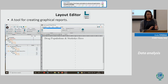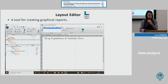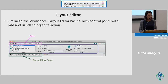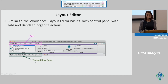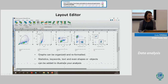After creating our gating strategy and analyzing our data, we can view everything together by opening the Layout Editor. Layout Editor is a tool to create graphical reports. Click on its icon in the upper part of the workspace. Layout Editor, similar to the FlowJo workspace, has a control panel with different tabs and bands. You can add, delete, or duplicate layouts, and use text and drawing tools. Graphs can be organized and reformatted here.